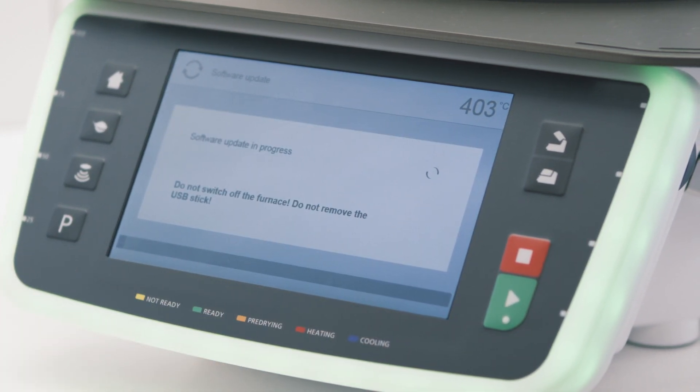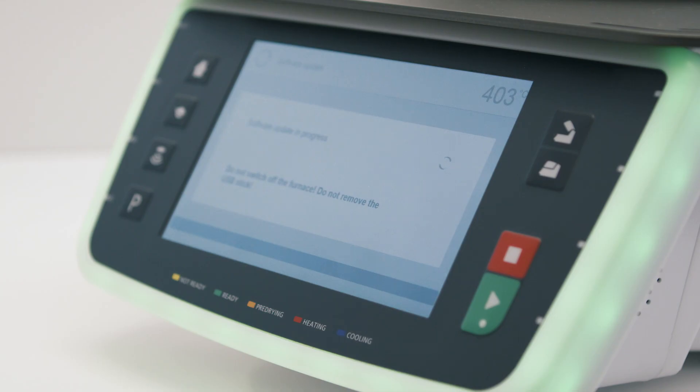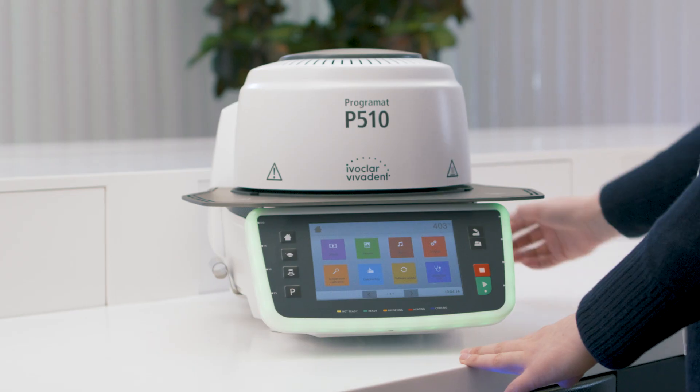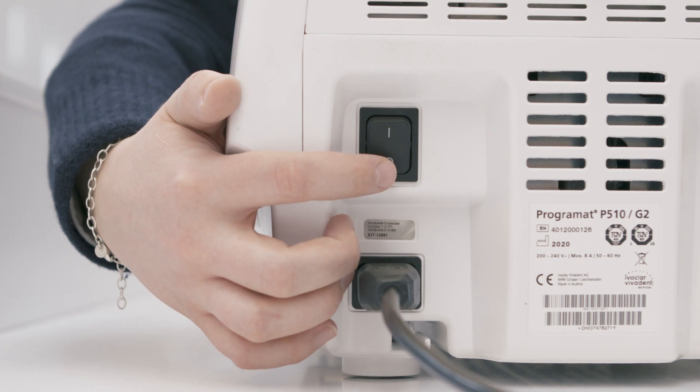The furnace will now download the most recent software version. Do not turn off the device or remove the USB flash drive while the update is being downloaded. Complete the update process by turning the device off and then on again.